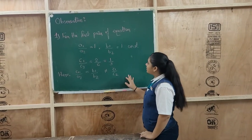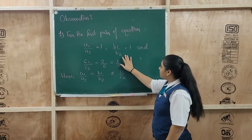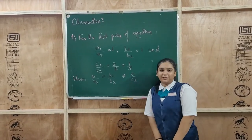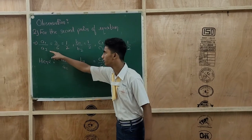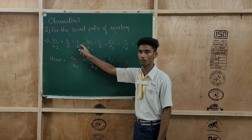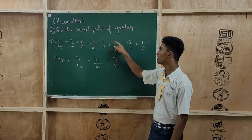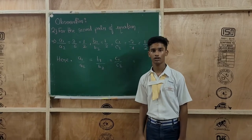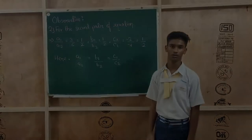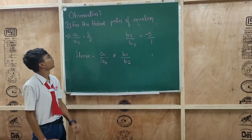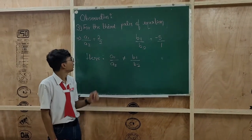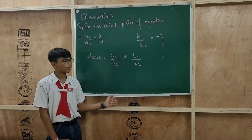For the first pair of equations: a1 upon a2 is equal to 1, b1 upon b2 is equal to 1, c1 upon c2 is equal to 2 upon 6 equals 1 upon 3; here a1 upon a2 is equal to b1 upon b2 but not equal to c1 upon c2. For the second pair: a1 upon a2 is equal to 3 upon 6 equals 1 upon 2; b1 upon b2 is equal to 1 upon 2; c1 upon c2 is equal to minus 2 upon minus 4 equals 1 upon 2; here a1 upon a2 is equal to b1 upon b2 is equal to c1 upon c2. For the third pair: a1 upon a2 is equal to 2 upon 2; b1 upon b2 is equal to minus 5 upon 1; here a1 upon a2 is not equal to b1 upon b2.